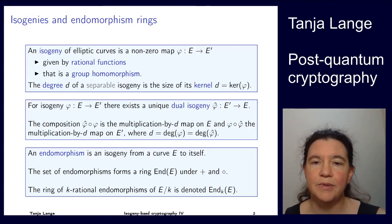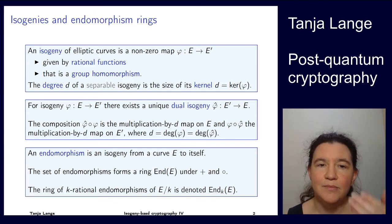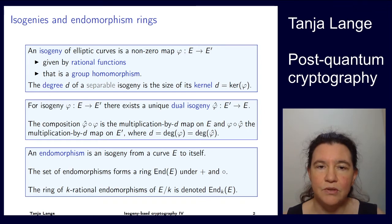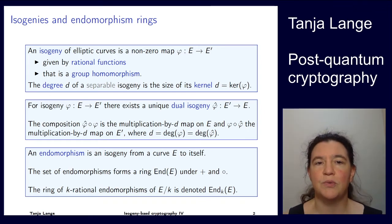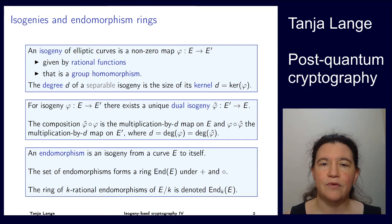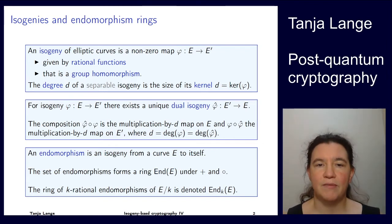We have already seen a little bit about isogenies and how they are defined. Here I'm repeating the definition again, giving some words to the math symbols. An isogeny is a group homomorphism — taking an elliptic curve as a group — and it's a map from one curve to another where this map is given by rational functions.